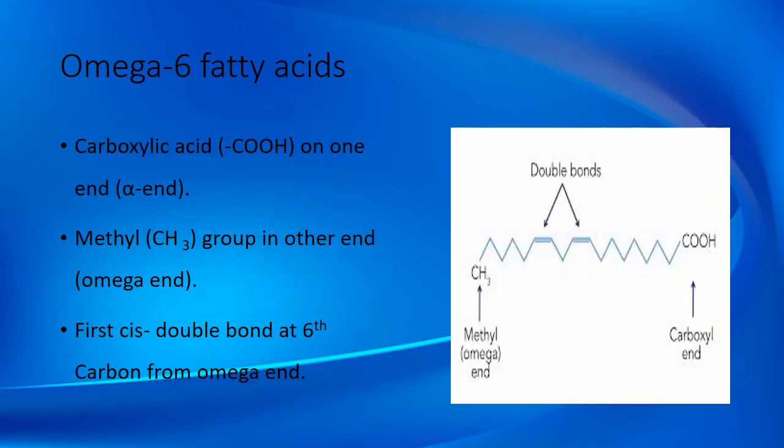Regarding the structure of omega-6 fatty acid: it has two ends. One end is called the methyl end and another end is called the carboxyl end. The methyl end is also known as the omega end, and the carboxyl end is also known as the alpha end. The first double bond is present at the six carbon position from the omega end.